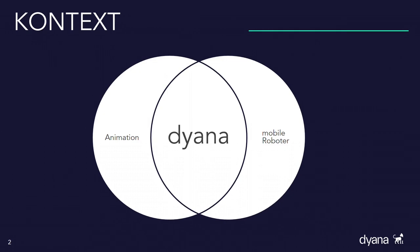Wir vom Fokusprojekt Diana haben uns die Aufgabe gesetzt, die Brücke zu schlagen zwischen dem fantastischen Reich der Animation und der beeindruckenden Welt der mobilen Robotik. Mein Name ist Sophia und zusammen mit meinem Kollegen Peter möchte ich Ihnen heute unser Projekt vorstellen. Unsere Vision ist es, eine vierbeinige Roboterplattform zu entwickeln, auf die dynamische Bewegungsabläufe aus Computeranimationen effizient übertragen werden können. Getauft haben wir diese Vision mit dem Namen Diana – eine Wortkomposition aus den englischen Begriffen Dynamic und Animatronic.